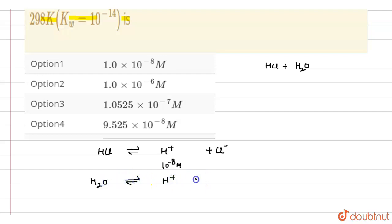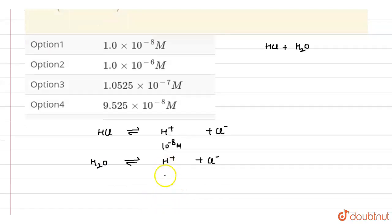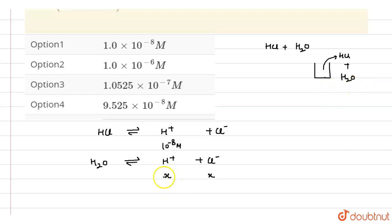When water dissociates, it also produces H⁺ ions. Let the concentration of OH⁻ ion from water be x. Since both HCl and water are present, the overall concentration of H⁺ ion is 10 raised to power minus 8 plus x.